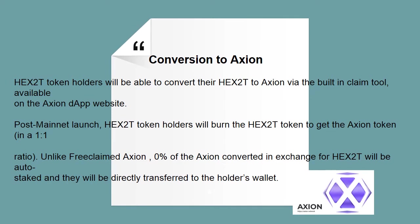Conversion to Axion: HEX 2T token holders will be able to convert their HEX 2T to Axion via the built-in claim tool available on the Axion DApp website. Post mainnet launch, HEX 2T token holders will burn the HEX 2T token to get the Axion token in a 1-to-1 ratio. Unlike free claimed Axion, 0% of the Axion converted in exchange for HEX 2T will be auto-staked — they will be directly transferred to the holder's wallet.